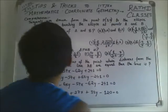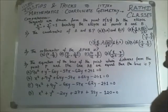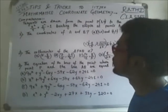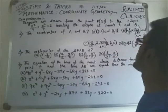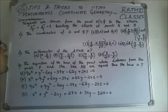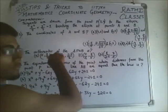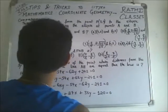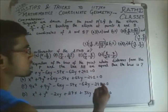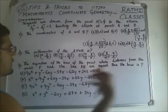The question says tangents are drawn from the point P to the ellipse x²/9 + y²/4 = 1, touching the ellipse at points A and B. The first part says find the coordinates of A and B. The second says find the orthocenter of triangle PAB. The third says find the equation of the locus of the point whose distances from point P and the line AB are equal.